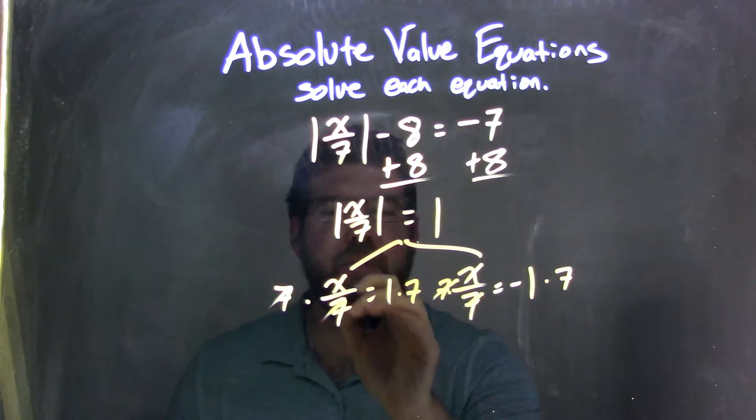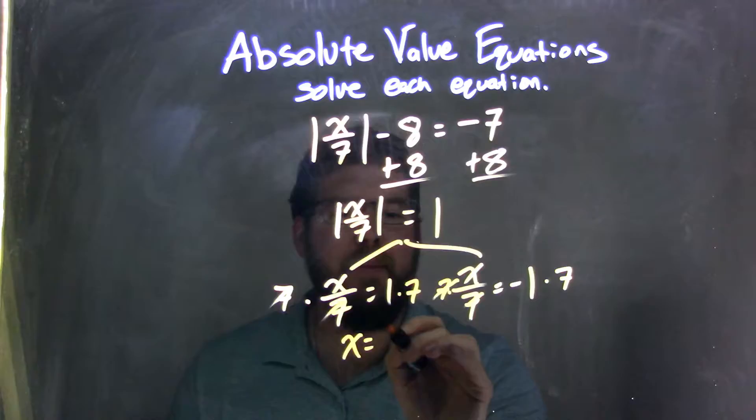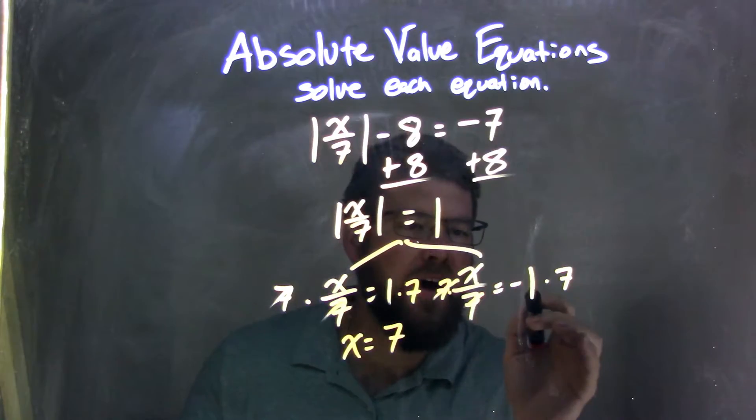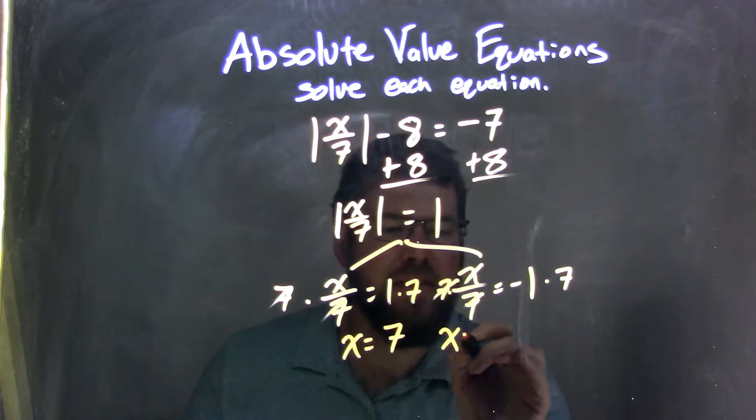7's cancel here, leaving me with x equals 1 times 7, which is 7, and negative 1 times 7 is negative 7.